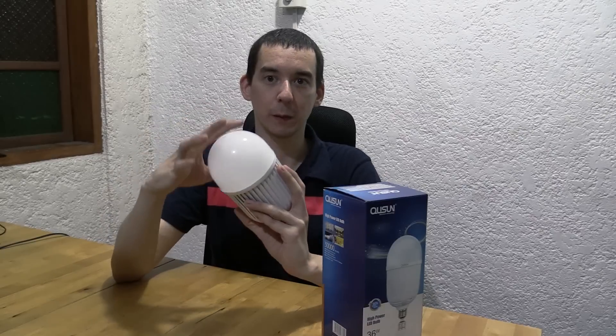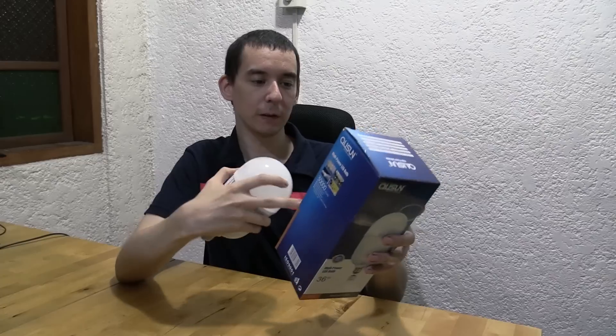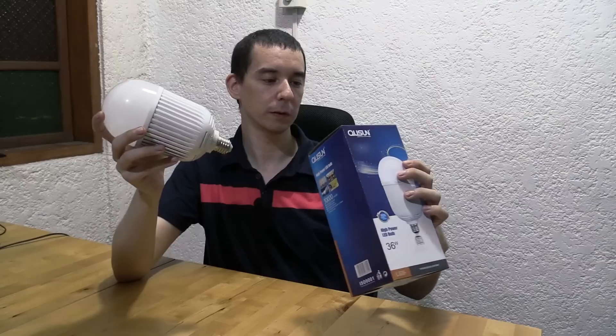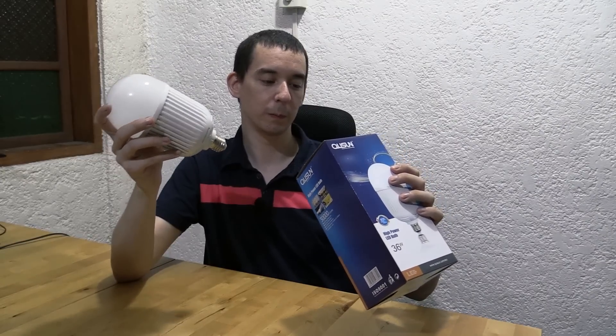So I tested this out in the store and it's pretty much like looking into the Sun. It's meant to be 36 watts, a color temperature of 6000K, E27 screw type of course and voltage input of between 180 and 250 volts.